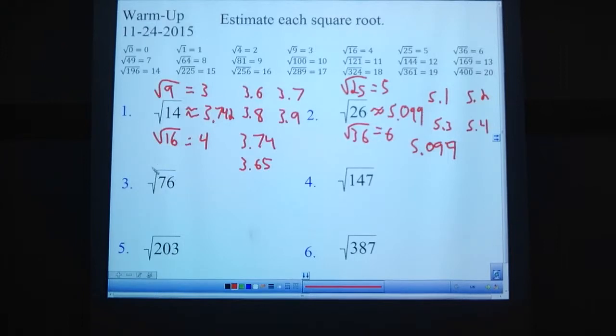Square root of 76. That's between square root of 64 and square root of 81. Square root of 64 is 8. Square root of 81 is 9. So it's between 8 and 9, 8 point something. 76 is closer to 81. If you're ever wondering, just subtract them. 81 minus 76 is 5. 76 minus 64. Seriously, the phone's ringing. Is 12.